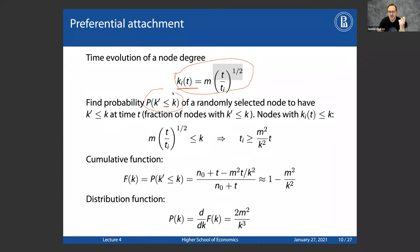Plugging uniform random attachment into the derivation, node degree grows much slower — logarithmically. Working through the formulas, you get a degree distribution that is exponential, not power law. This tells you that preferential attachment — connecting to higher-degree nodes — is actually critical for the model to produce a power law distribution. Without it, just having growth alone gives an exponential degree distribution.